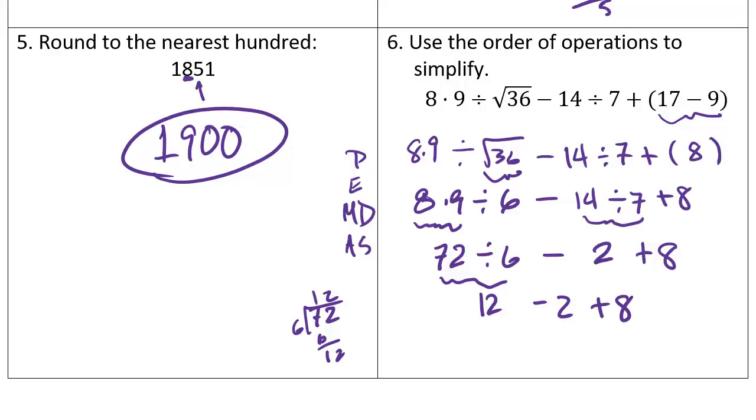12 minus 2. Now addition and subtraction, remember, are in the same order line. So 12 minus 2 is 10, plus 8, and so this is 18. Looking good so far. That's number 6.